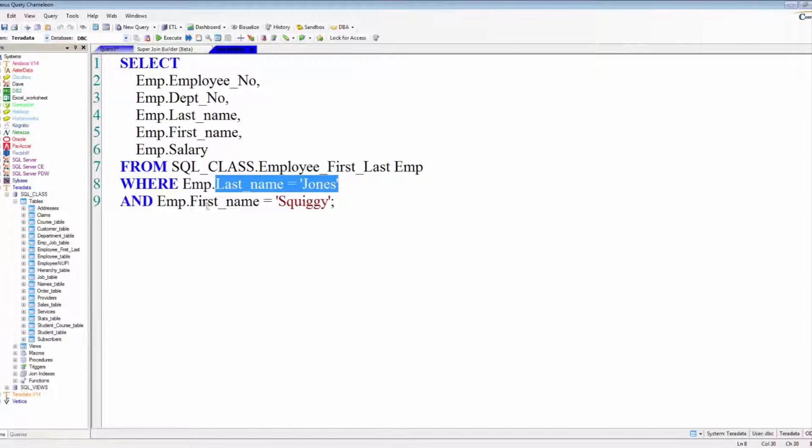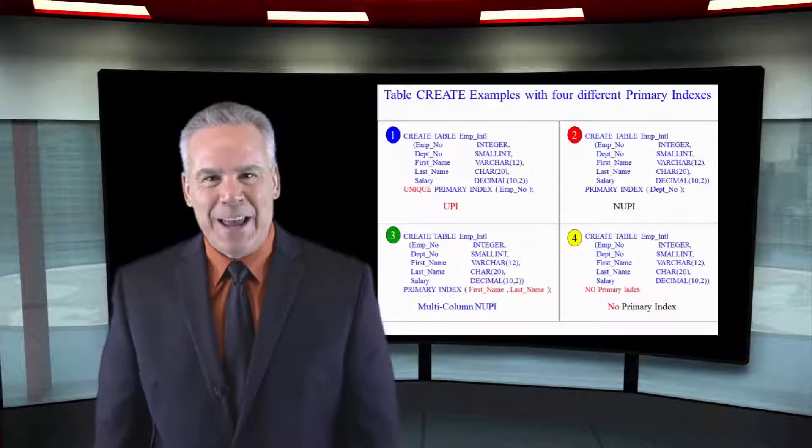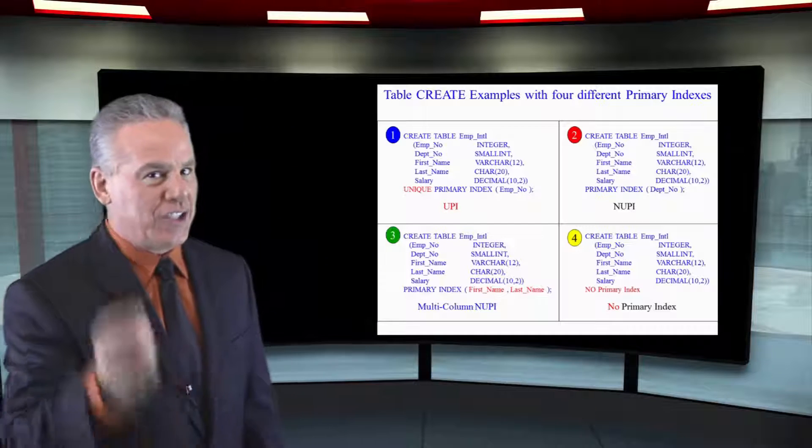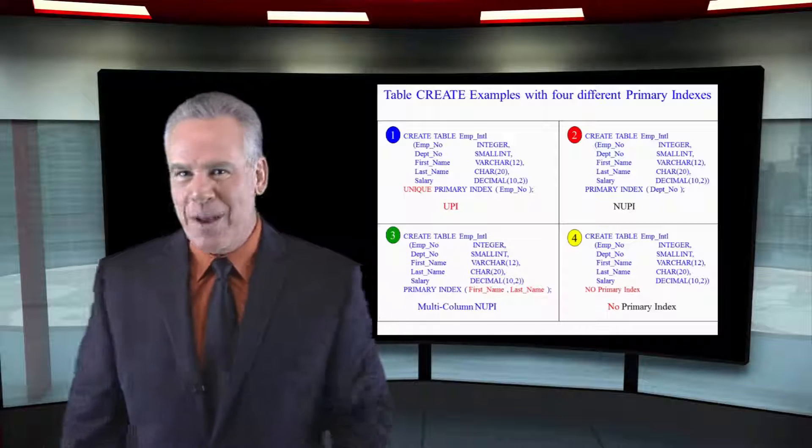And lastly, we've got a no PI table. No primary index because we want perfect distribution, because we're using it as a staging table, or we're going to try that new columnar design, which we'll learn about later.